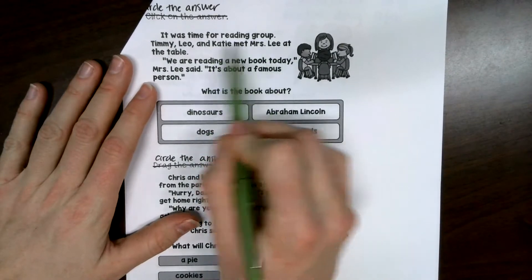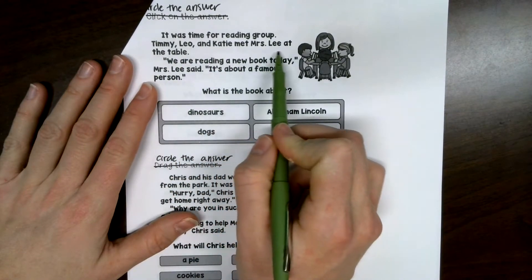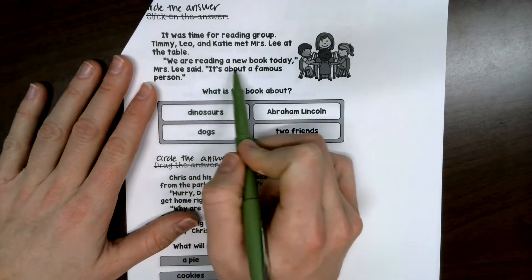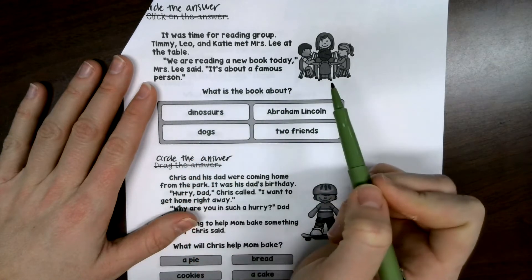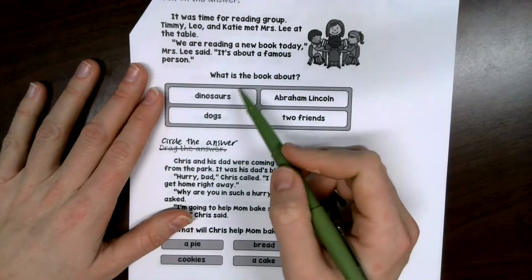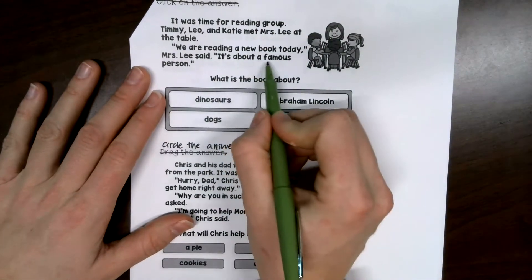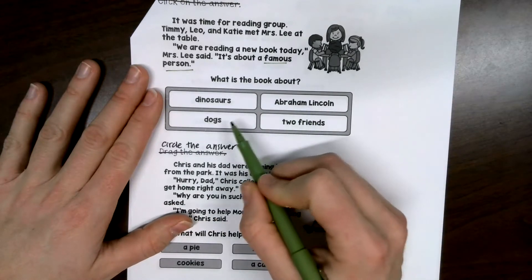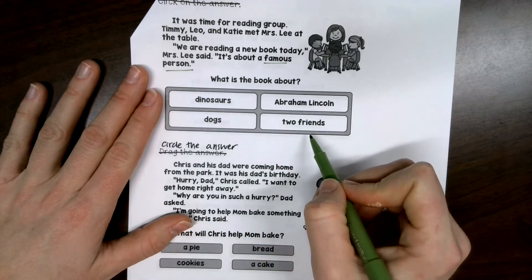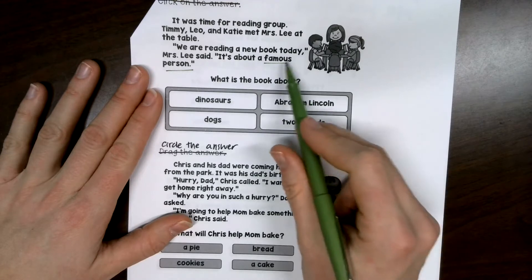It was time for a reading group. Timmy, Leo, and Katie met Mrs. Lee at the table. We are reading a new book today, Mrs. Lee said. It's about a famous person. So, what is the book about? If it's about a famous person. Do you think it's about dinosaurs, Abraham Lincoln, dogs, or two friends? A famous person.